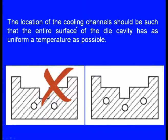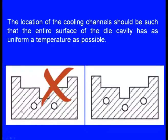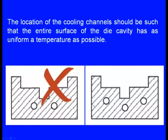The location of cooling channels should be such that the entire surface of the die cavity has as uniform a temperature as possible. A poor design has only two cooling channels that are not well distributed. A better design increases the number of cooling channels and places them uniformly around the cavity.